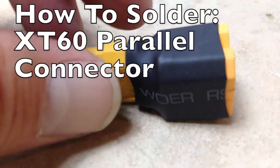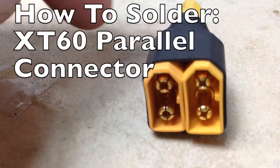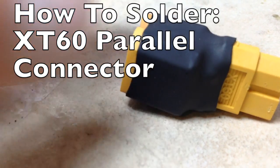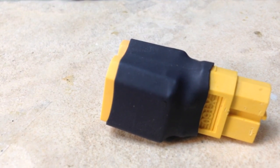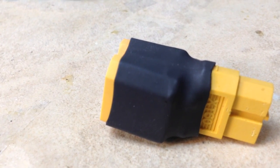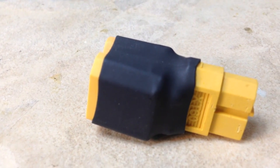Alright guys, it's time to make an XT-60 parallel connector that looks just like this. It's easy to do. It's great because it doesn't have any extra wires or any extra length and you can extend your run times in your RC aircraft.